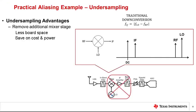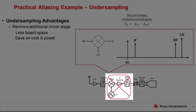Practical aliasing example. At first, aliasing may appear to be undesirable. However, it can be very useful. The most useful property is mixing a higher frequency signal to a lower frequency. This can translate into cost saving, power saving or board space saving by removing the need of an additional mixer stage.